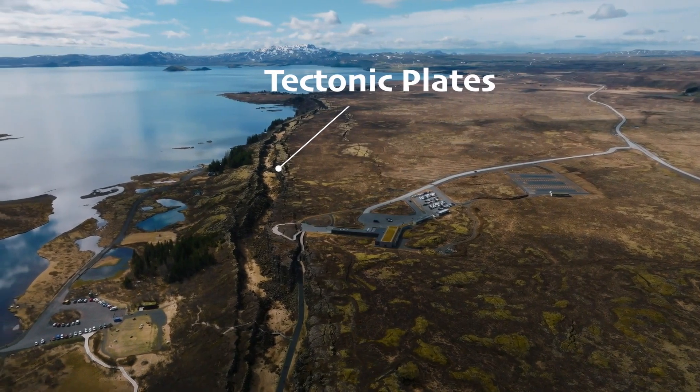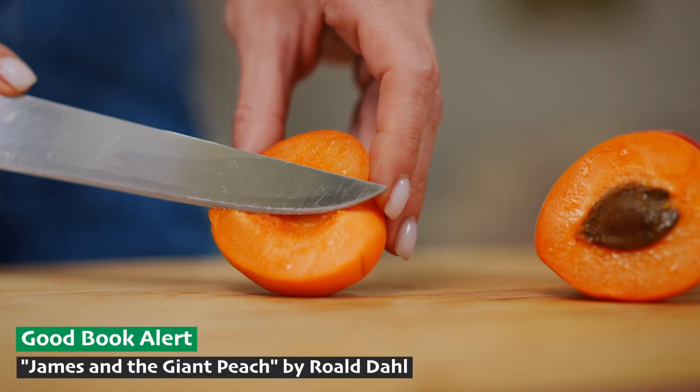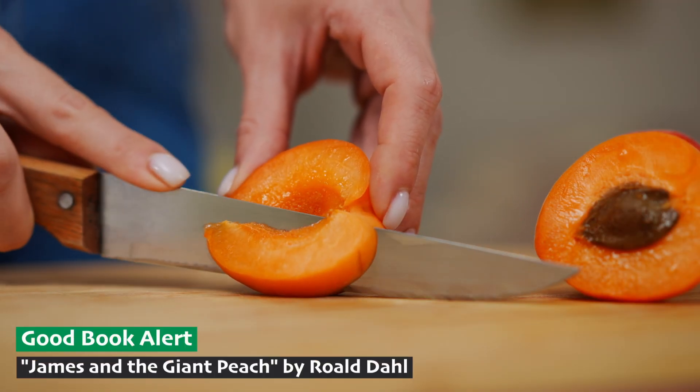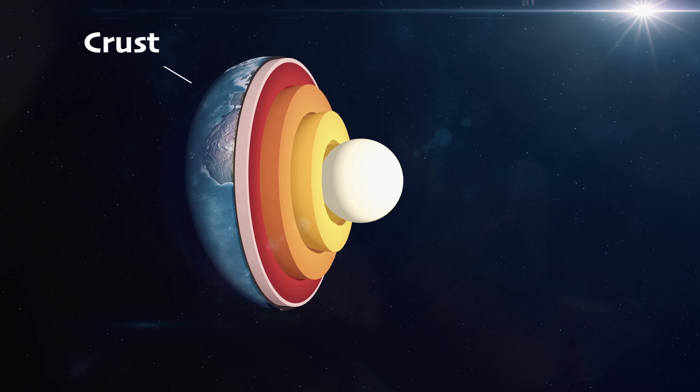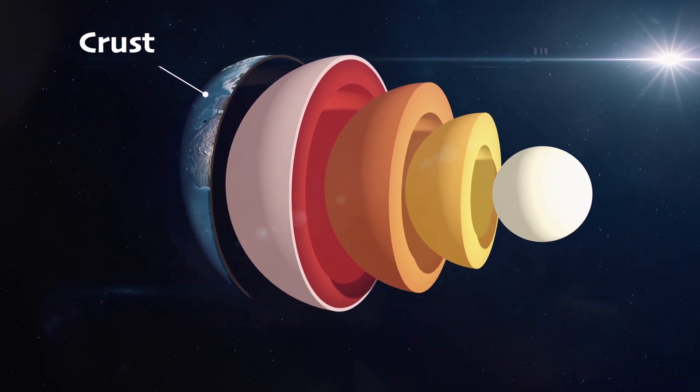To understand how this happens, let's start with the structure of the Earth. Imagine the Earth was a giant peach with several layers. The outermost layer, where we live, is called the crust. It's like the skin of the peach, thin and solid.